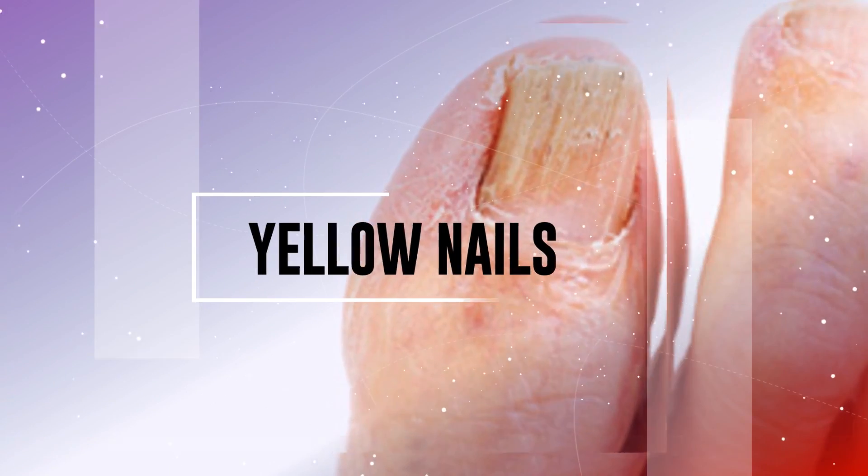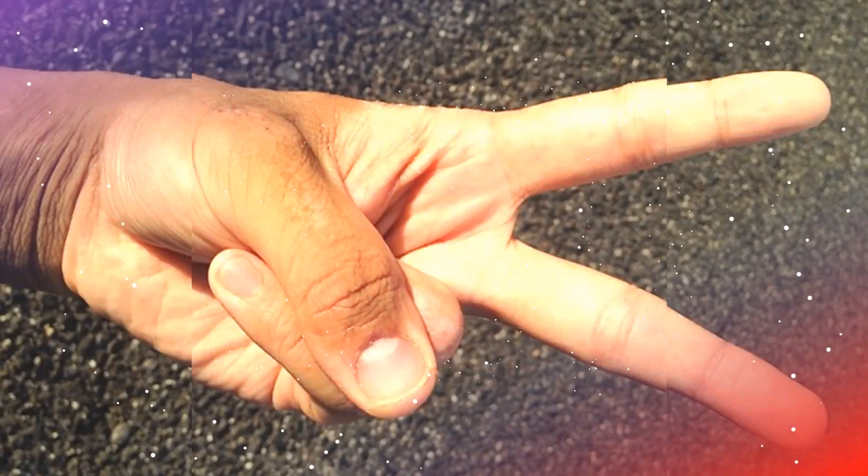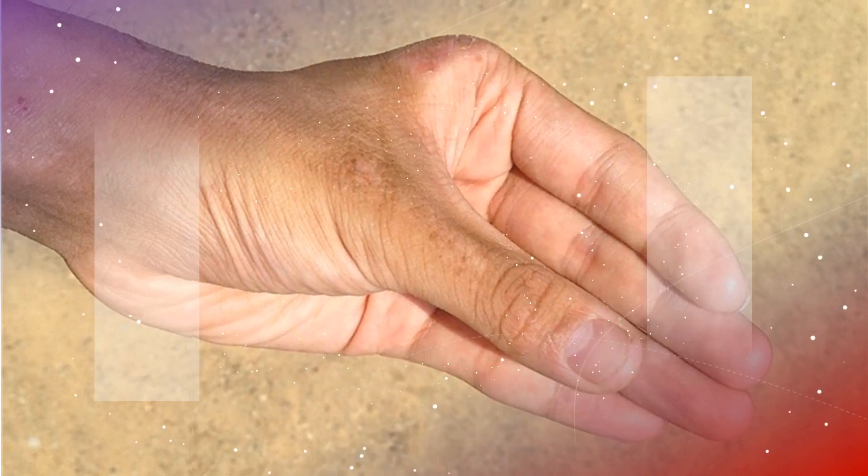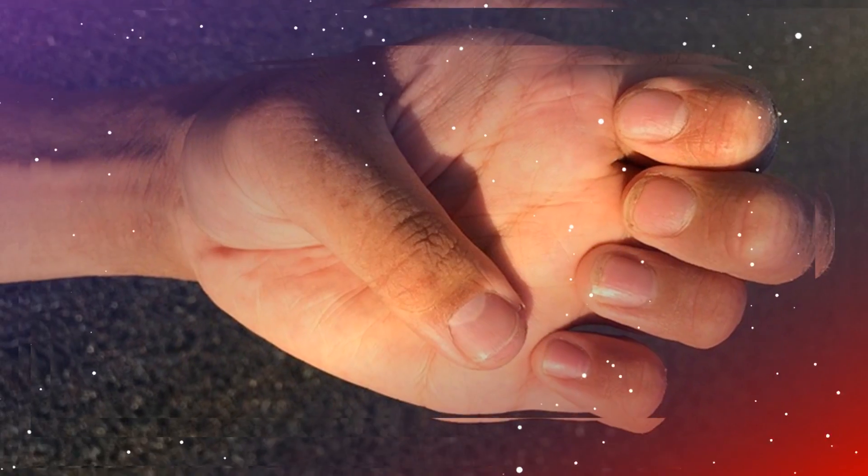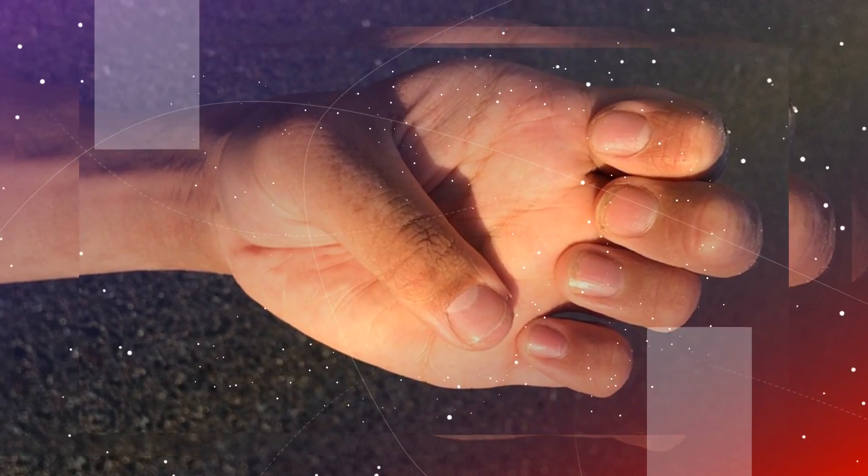1. Yellow Nails. Your nails may yellow with age or due to the use of acrylic nails or nail polish. Smoking can also stain nails the yellowish hue. If your nails are thick, crumbly, and yellow, a fungal infection could be to blame. Less often, yellow nails may be related to thyroid disease, diabetes, psoriasis, or respiratory disease such as chronic bronchitis.